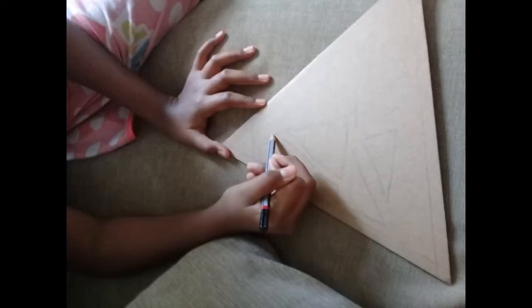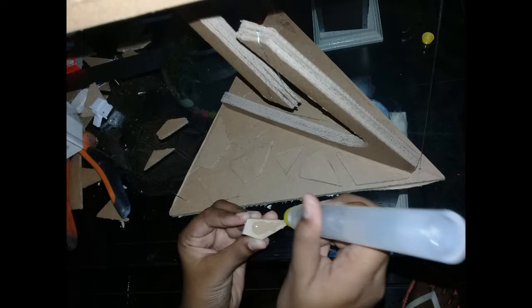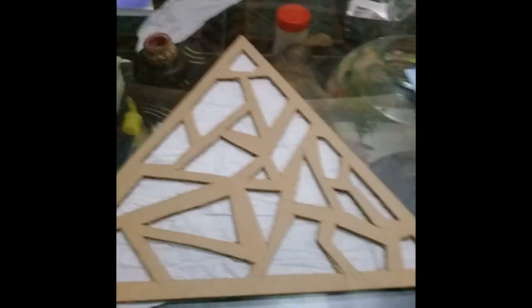To make the lampshade, I glued three triangle shaped cardboard together. I used some leftover cardboard to decorate the foot. Following this, I glued the muslin paper inside the lampshade.